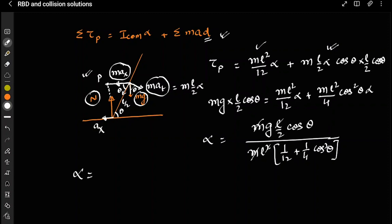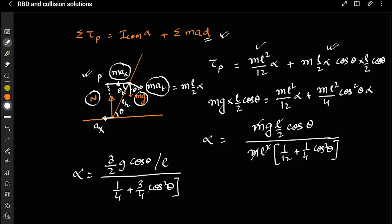Cancelling m and simplifying, this gives alpha = 3g*cosθ / [l * (1/4 + 3cos²θ/4)] — which is exactly the same answer as before: 6g*cosθ / [l*(1 + 3cos²θ)]. This method is very convenient because in a single step you can solve this and many similar problems.